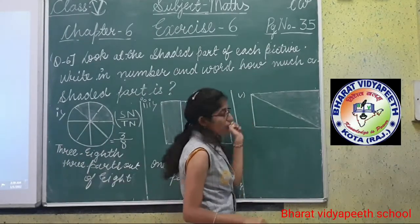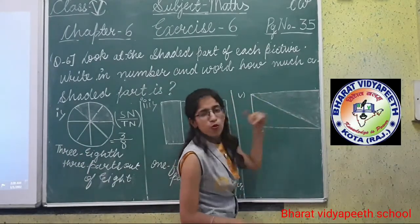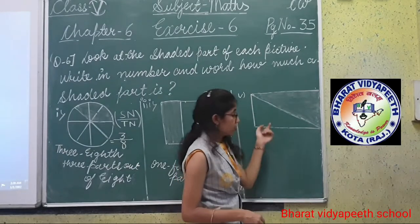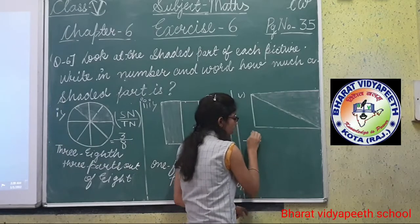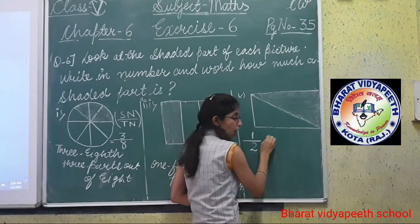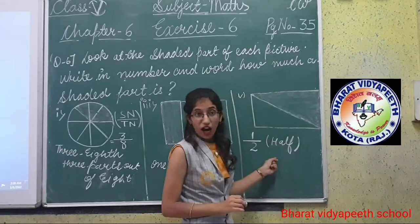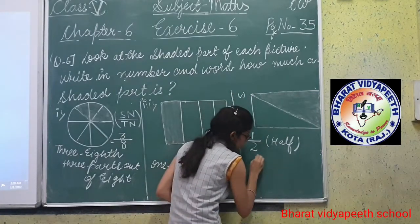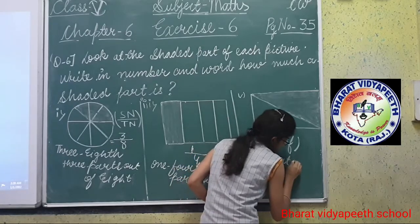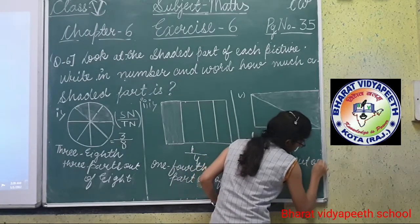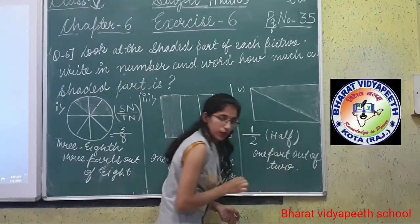Now see the fifth one. Here half of the portion will be shaded. The total number of parts is 2. Shaded part: 1. How can we write? Half. Or in second formula: 1 part out of 2. Clear?